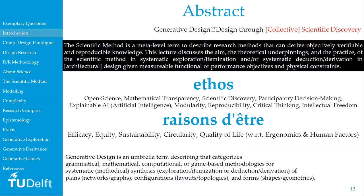How I see generative design: it is an umbrella term for processes — grammatical or rule-based, mathematical, computational, or game-based — for systematic synthesis in the sense of exploration, itemization, deduction, or derivation of plans, configurations, or forms. Generative design processes can be very transparent and explicit in the sense of explicating the logical reasoning process. Therefore, open science is key and mathematical transparency is of paramount importance.